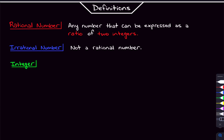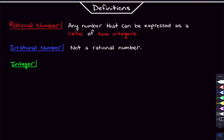Let's start off with these definitions. A rational number is any number that can be expressed as a ratio of two integers. That's going to mean nothing to you if you don't know what an integer is, so we're going to go over that. An irrational number is basically just not a rational number — it's something that you cannot express as a ratio of two integers. So now let's get to the idea of, well, what's an integer, so we can start understanding this whole ratio business.